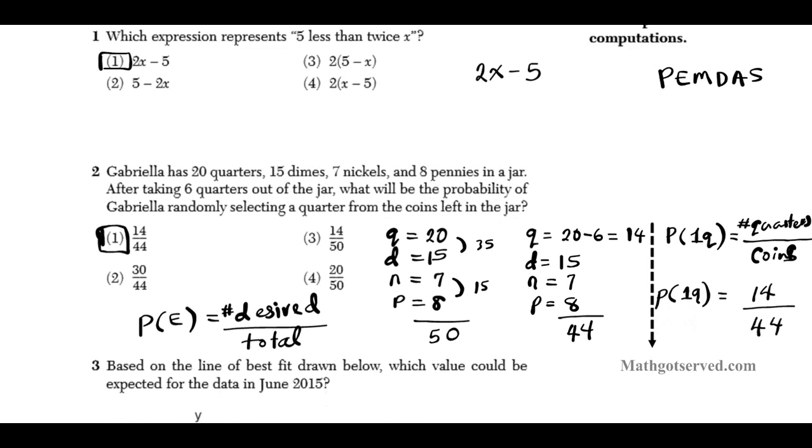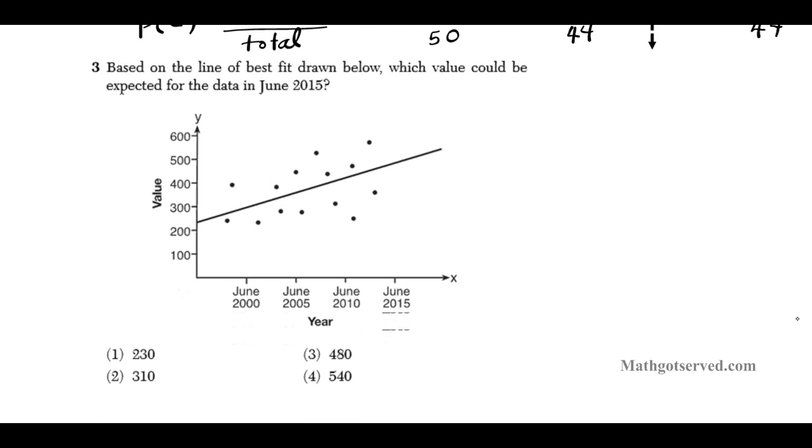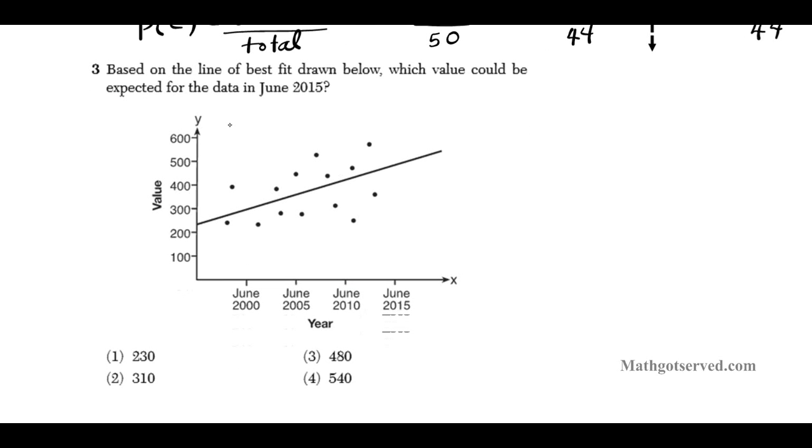Let's move on to question 3. Question 3, we have a line right here. It says, based on the line of best fit drawn below, which value could be expected for the data in June 2015? This is an example of positive correlation, because you see the points. When you draw a line of best fit for the points, you have a line that has a positive slope. When you go from left to right, the line is increasing. That indicates a positive, a positive correlation.